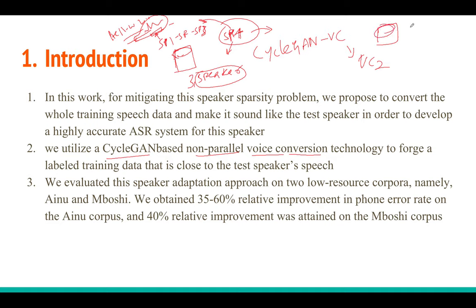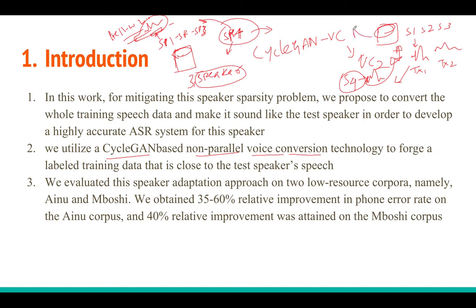To summarize: you take transcribed audio from speakers 1, 2, and 3, use CycleGAN to make those audio files sound like speaker 4, and get new synthetic data with the same transcripts but spoken by speaker 4. Add that data back to training so the model has already seen speaker 4's speech features during training. Using this approach on two datasets — Ainu and Boshi — they achieve significant improvements in PER (phoneme error rate).